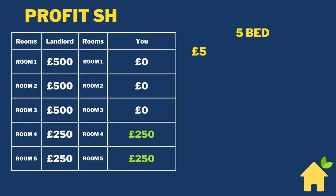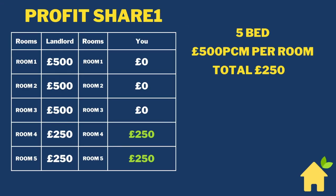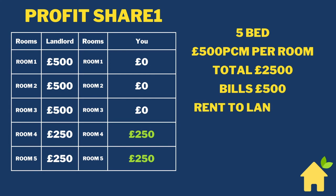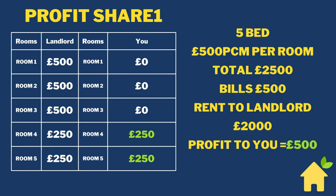I prefer profit share. This is profit share model one — you are sharing profit from the last two rooms. Room one: landlord gets £500, you get nothing, all the way to room three. When it hits room four, the landlord gets £250 and you get £250. Room five: landlord gets £250, you get £250. The bills remain in the landlord's name — you are not guaranteeing rent. You only get paid upon rooms four and five being filled. If you do not fill room four or five, then you do not get paid. However, you also do not have any outlays.